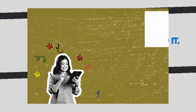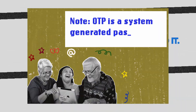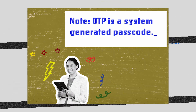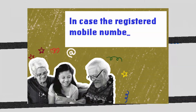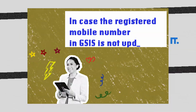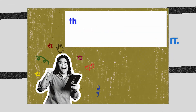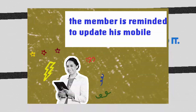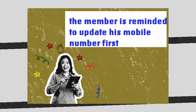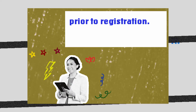OTP is a system-generated passcode. In case the registered mobile number in GSIS is not updated, the member is reminded to update his mobile number first prior to registration.